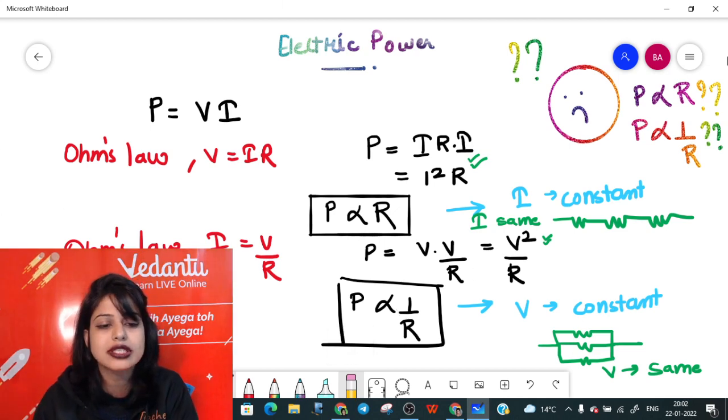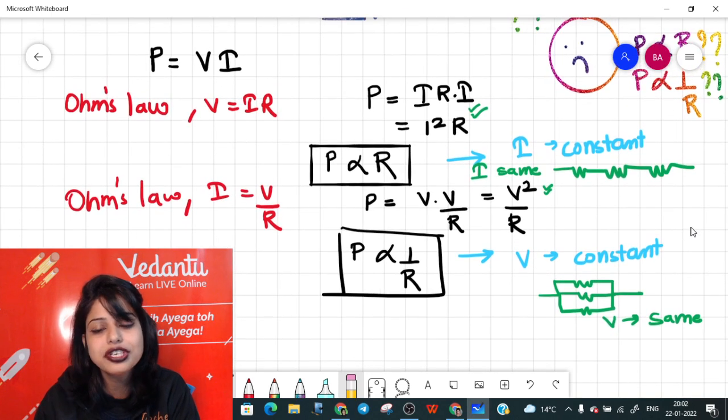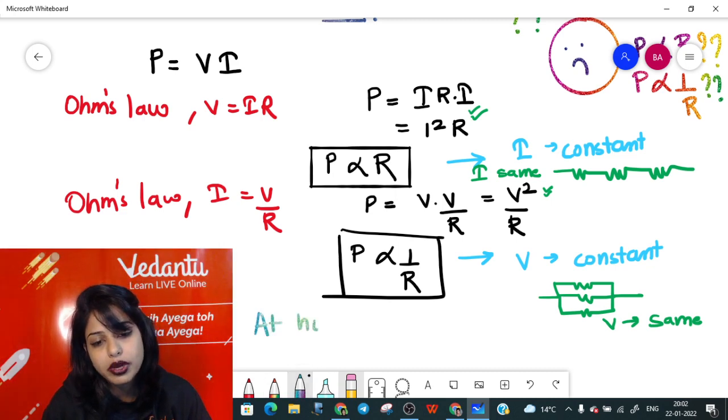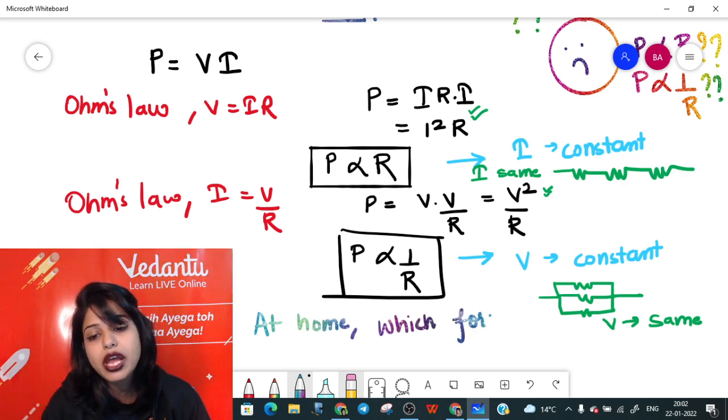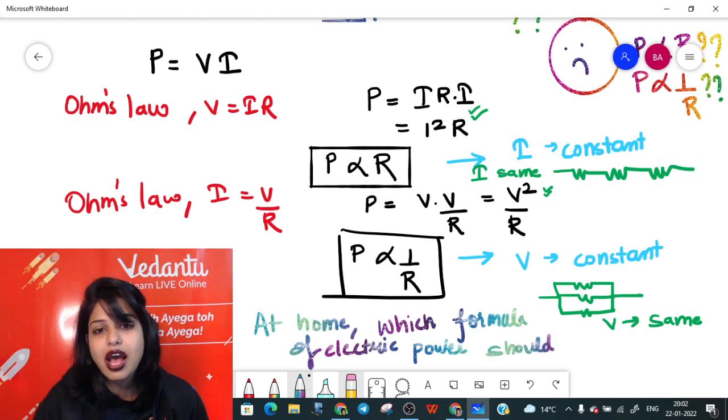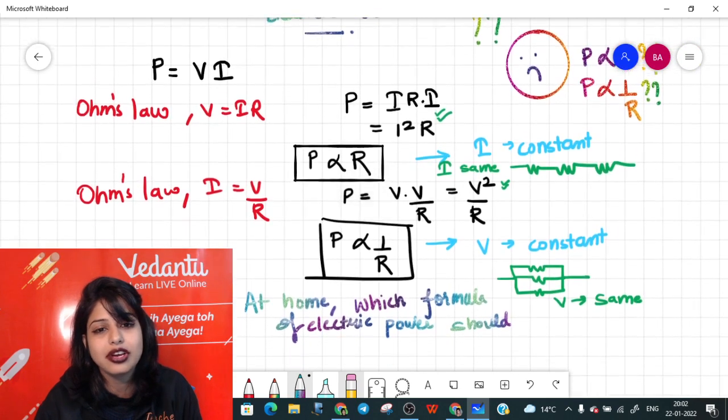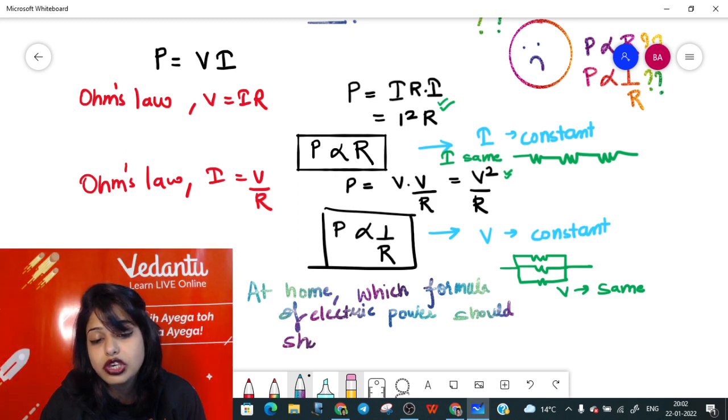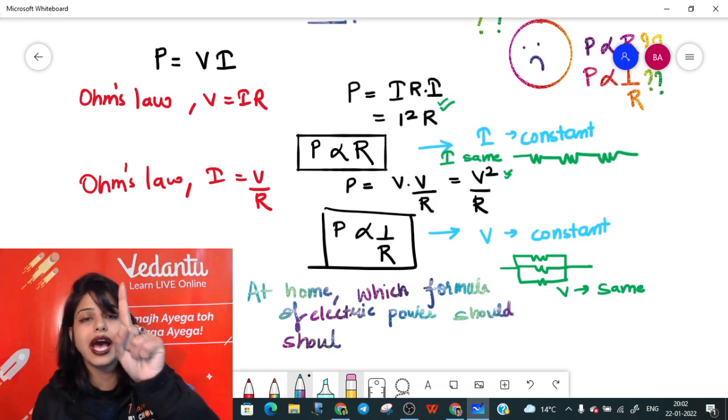Now I am going to leave you with a simple question. The question will be: tell me, if you are using a circuit at home, so at home which formula of power should you apply? Which formula of electric power should we use at our home? Tell me, people. Let's see how many of you are going to get to the right answer. At home, which formula of electric power should we use? Should we use I square R, or should we use V square upon R?